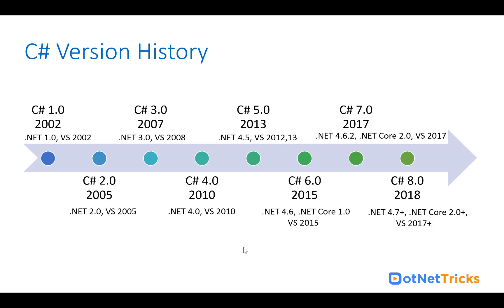C# 5.0 was released in 2013 with .NET Framework 4.5 and Visual Studio 2012, and you can also use it with Visual Studio 2013. C# 6.0 was released in 2015 with .NET Framework 4.6 and .NET Core 1.0, which is a cross-platform framework you can run on Mac, Windows, and Linux, with Visual Studio 2015. C# 7.0 was released in 2017 with .NET Framework 4.6.2 and .NET Core 2.0, with Visual Studio 2017.